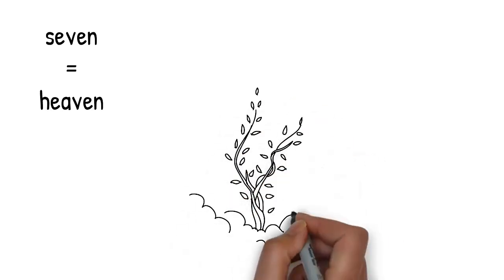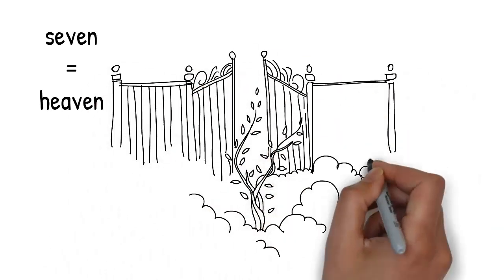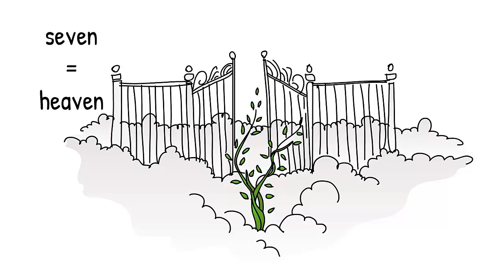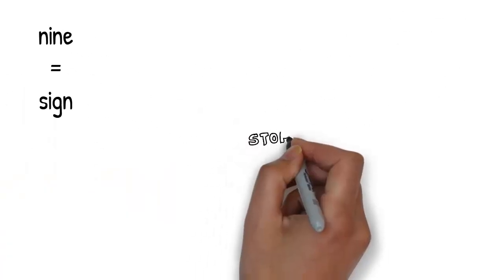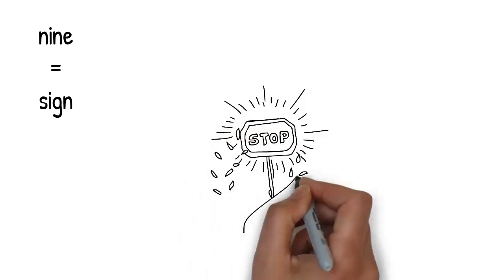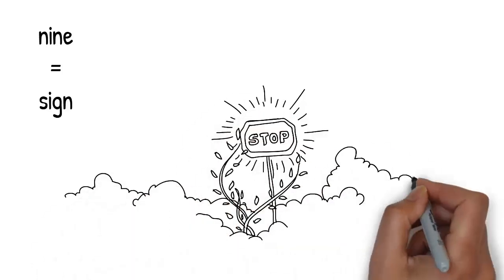The vine keeps growing and growing, all the way up to heaven, up through the clouds and starts to grow around the stereotypical pearly gates. Heaven reminds you of seven. The vine's growing a little too fast and a sign suddenly appears telling the vine to stop. Sign rhymes with nine.